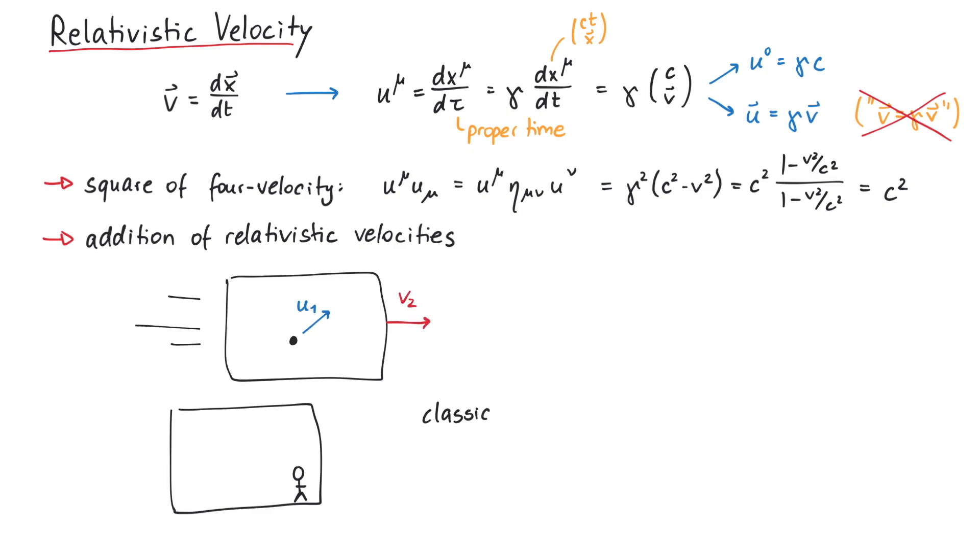In classical mechanics, we could add these two vectors. But in special relativity, we have to be more careful when we want to find the resulting velocity.